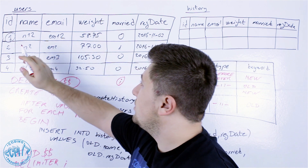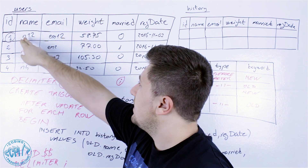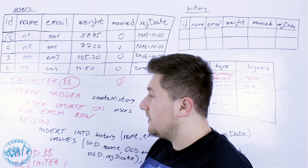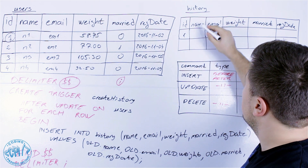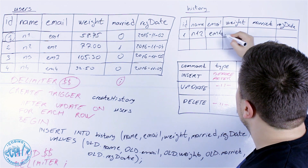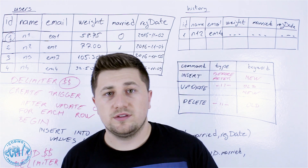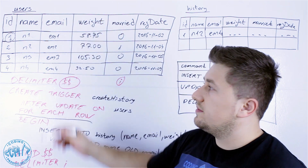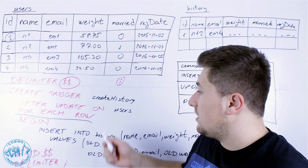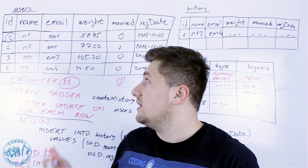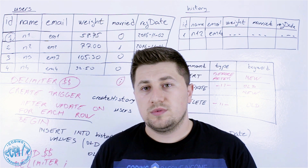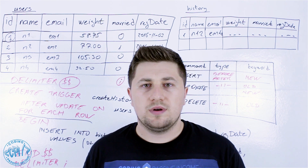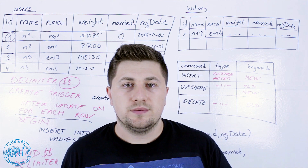For example, if the user with ID 1 changes their name and email — say from n12/em12 to something new — the old data will be stored in the history table. Since we said 'for each row', this applies to all users. This trigger automatically executes each time there is an update, which is very useful for calculating data in other tables or deleting data in other tables. Let me now show on my PC how to do this inside MySQL Workbench.